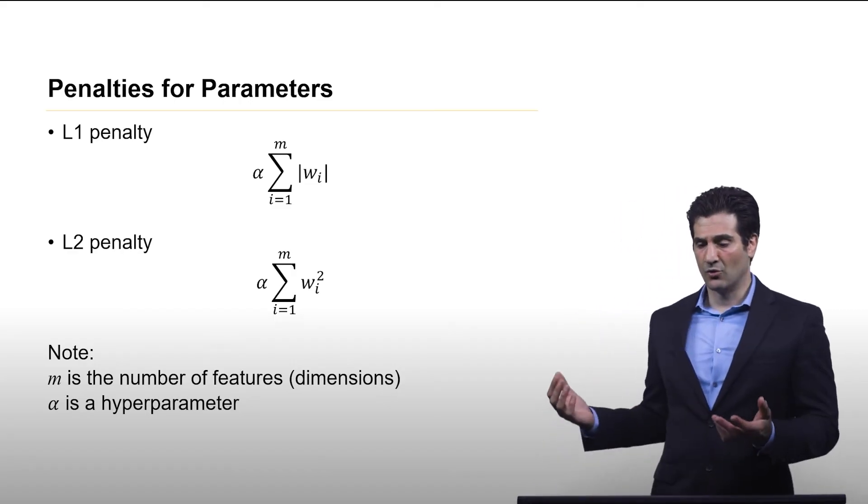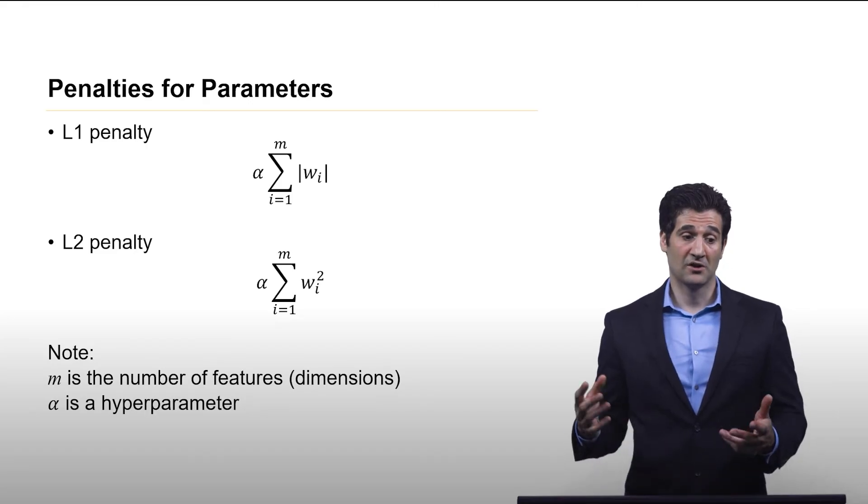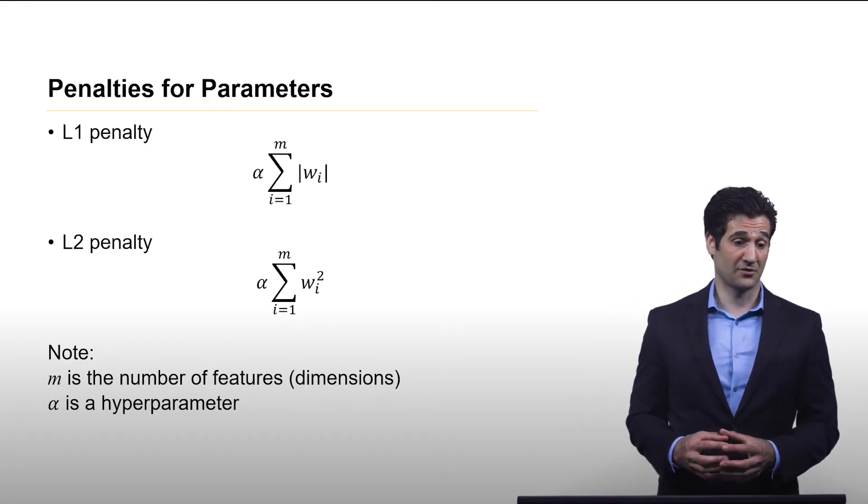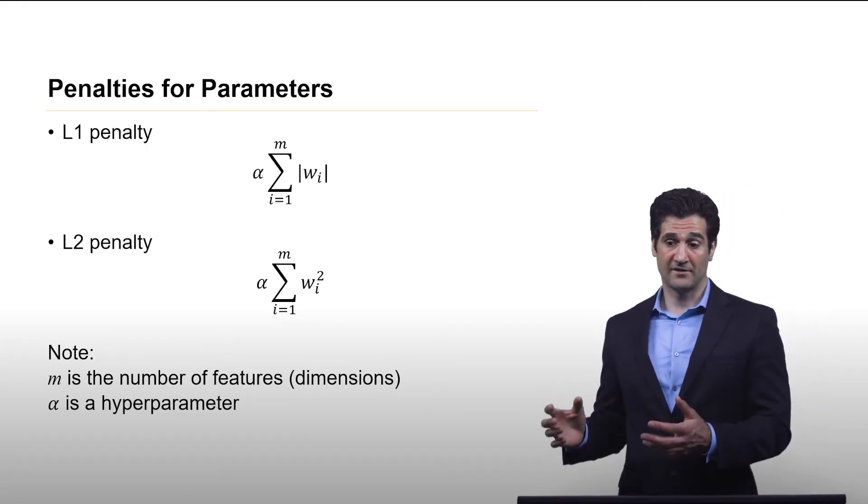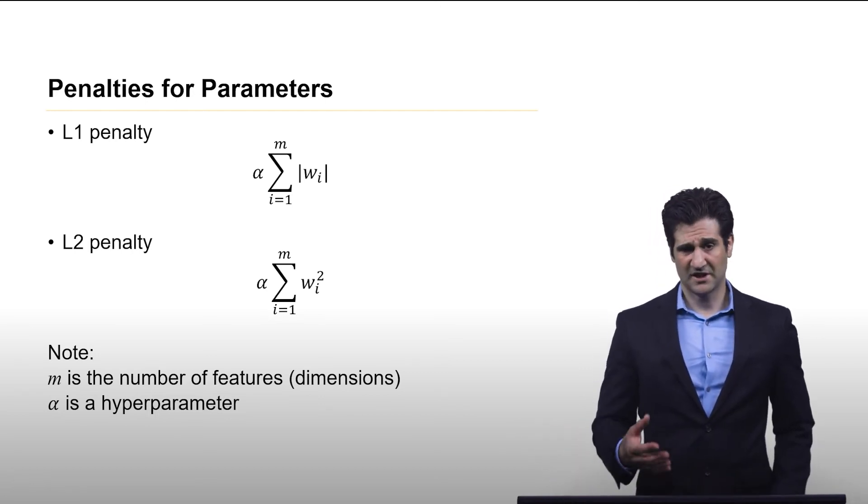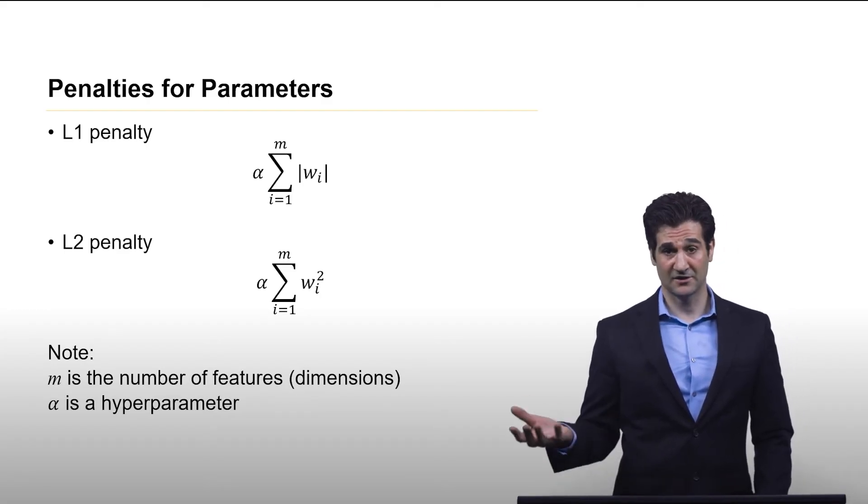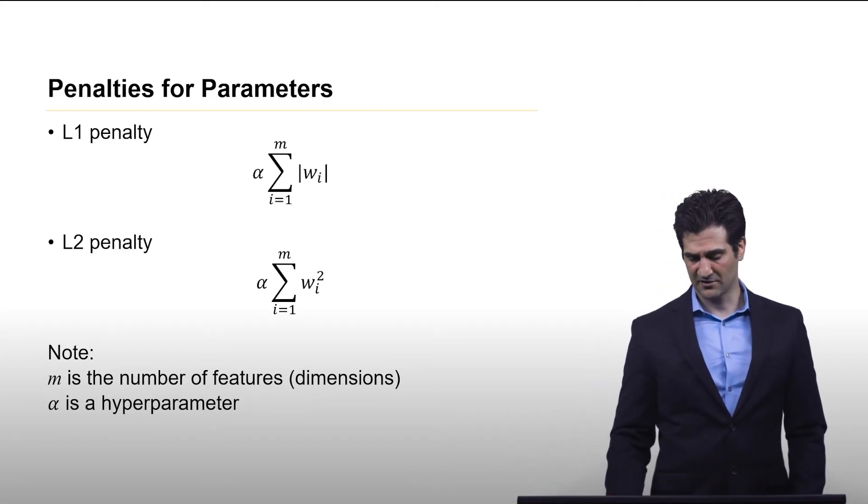The more features that you are assigning large weights to, the more that penalty increases. So you want to have gradient descent avoid doing that. What's nice is it's a linear combination, so it's not really adding anything to the complexity of your objective function.